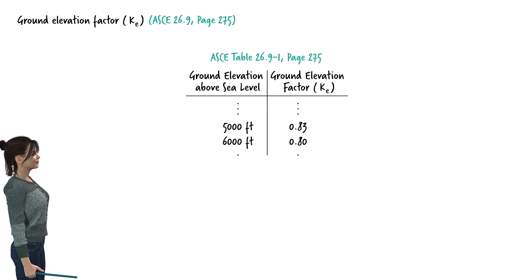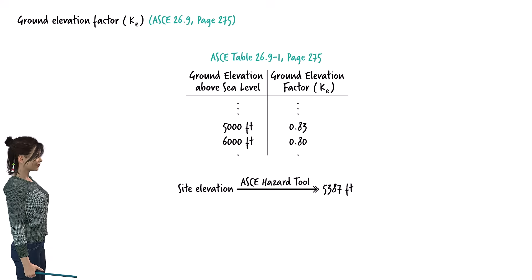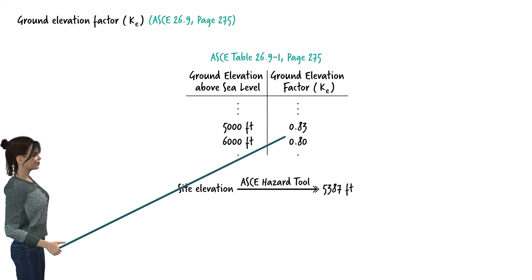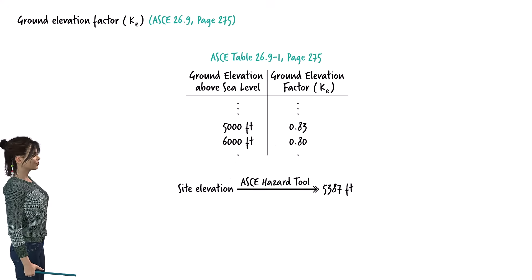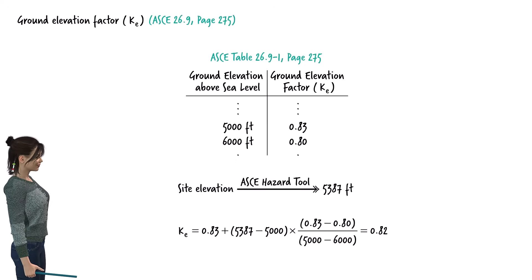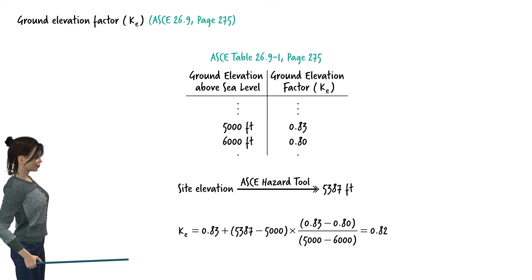ASCE Table 26.9-1 lists the ground elevation factors for various elevations above sea level. According to the ASCE hazard tool, the elevation of our building is 5,387 feet above sea level. From table 26.9-1, the ground elevation factor is 0.83 at 5,000 feet and 0.8 at 6,000 feet. By interpolation, we can determine K sub E for the elevation of 5,387 feet. It equals 0.82.